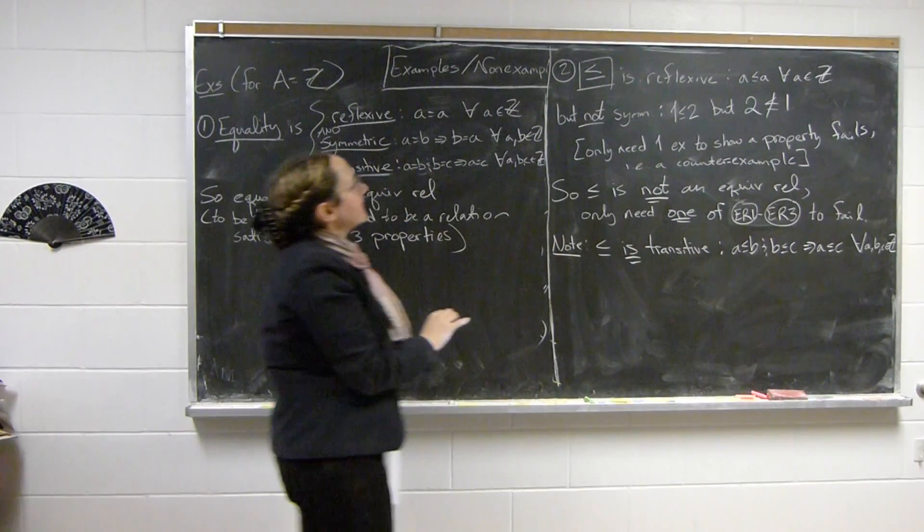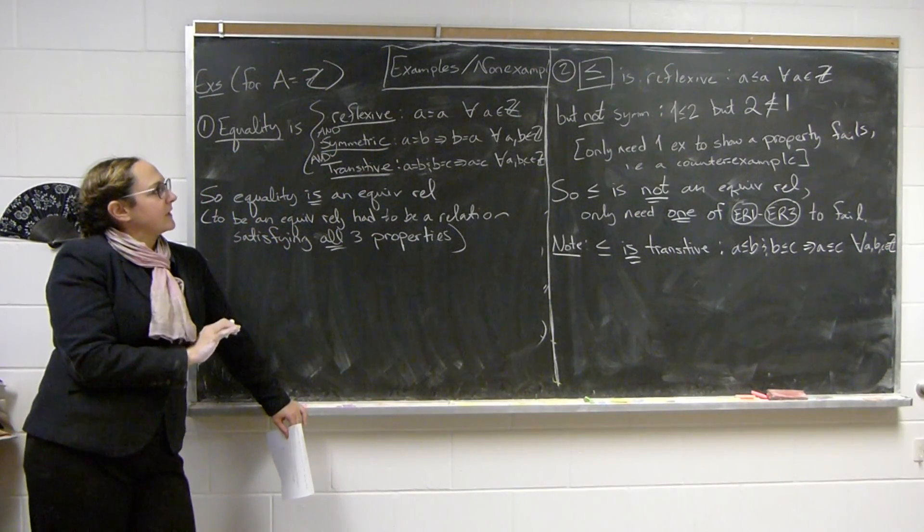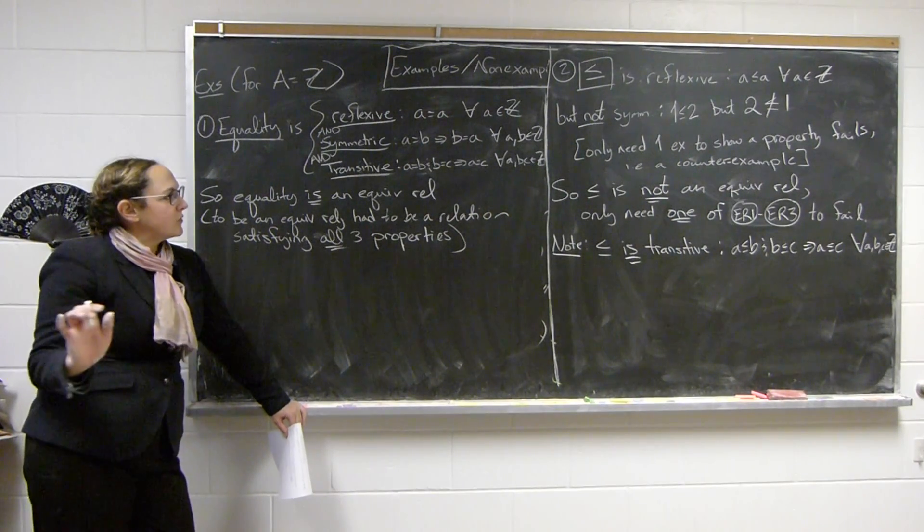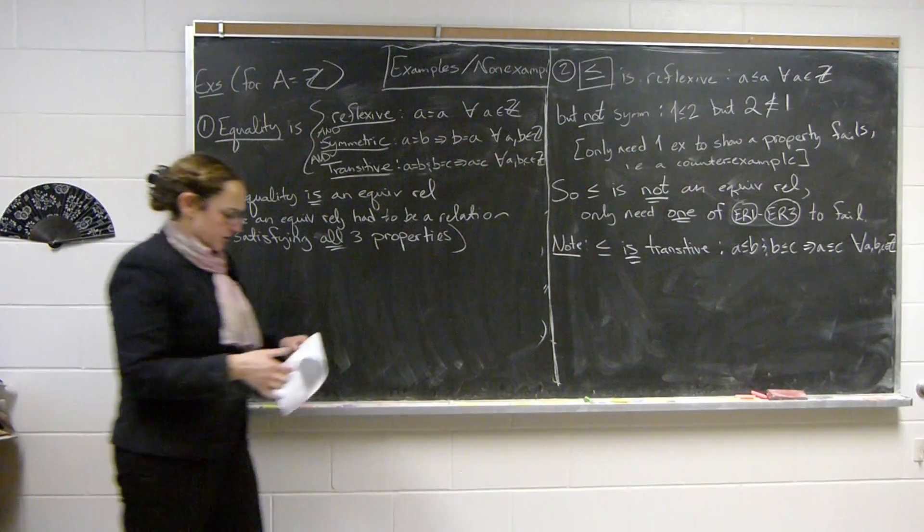But that wasn't enough. It wasn't enough that it was both reflexive and transitive. All that had to happen was that one of those three, namely symmetry failed. And all that it took to show that symmetry failed was a single counterexample.